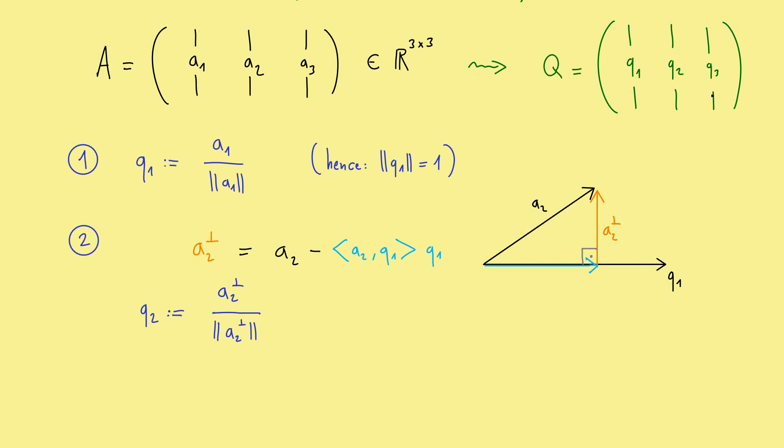Now, before doing Q3, let's first talk about our matrix R as well. Let us just use the space up here. Now, please recall what we want for the matrix R. We want to multiply Q with R such that we get out our original matrix A.